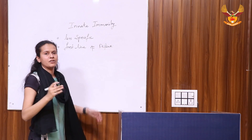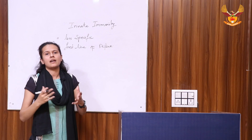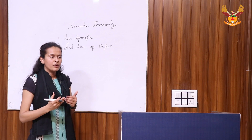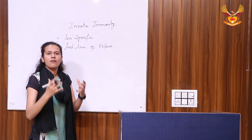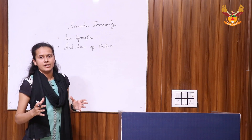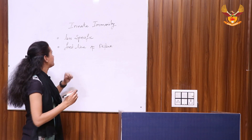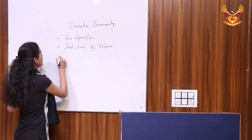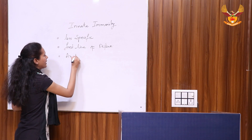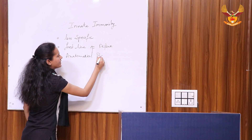First line of defense means our environment is surrounded with lots and lots of pathogens and microorganisms. It protects our body from microorganisms. That's why we call it the first line of defense. The first line of defense includes anatomical barriers.